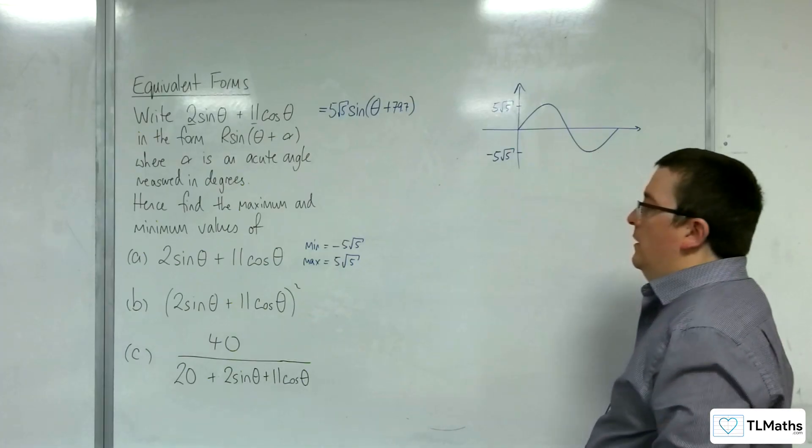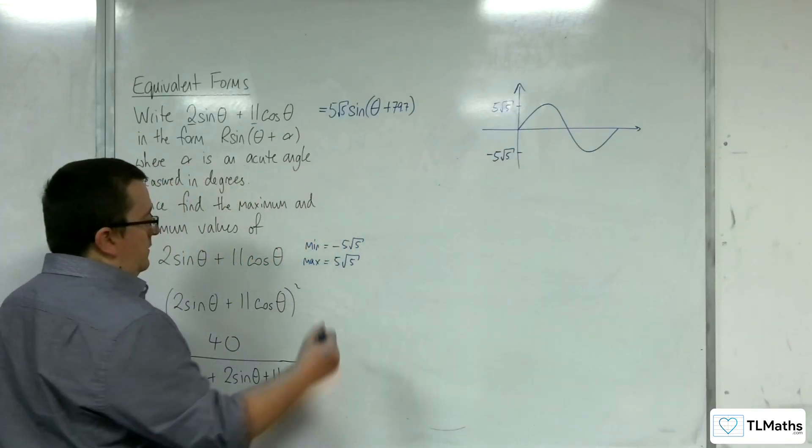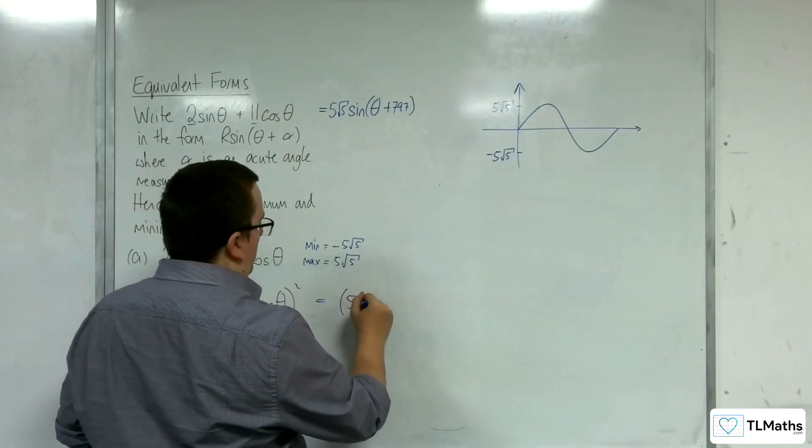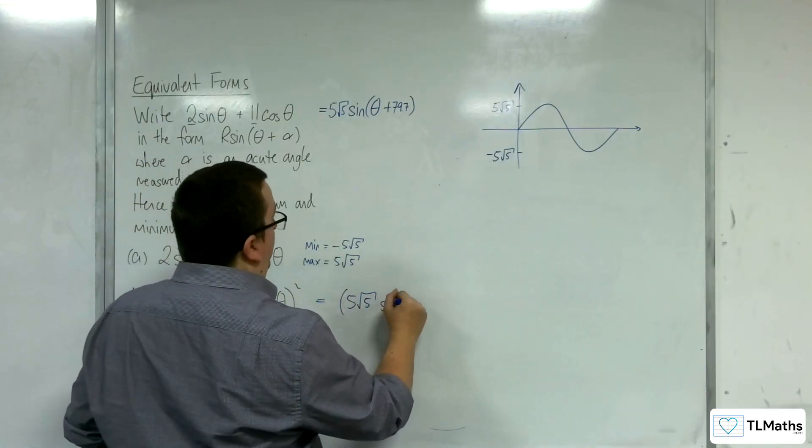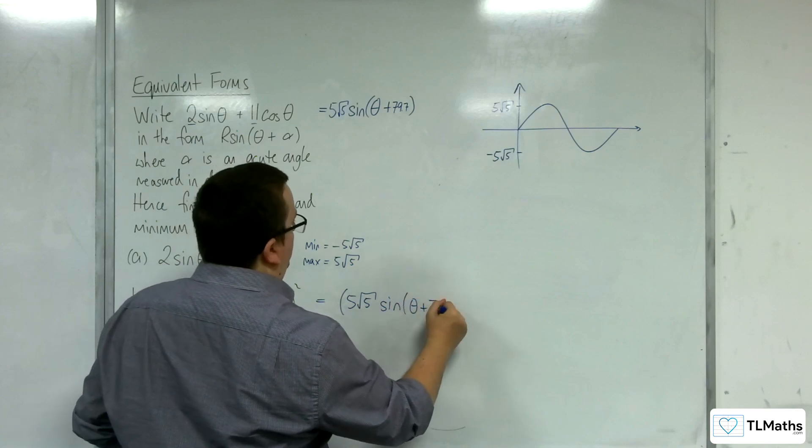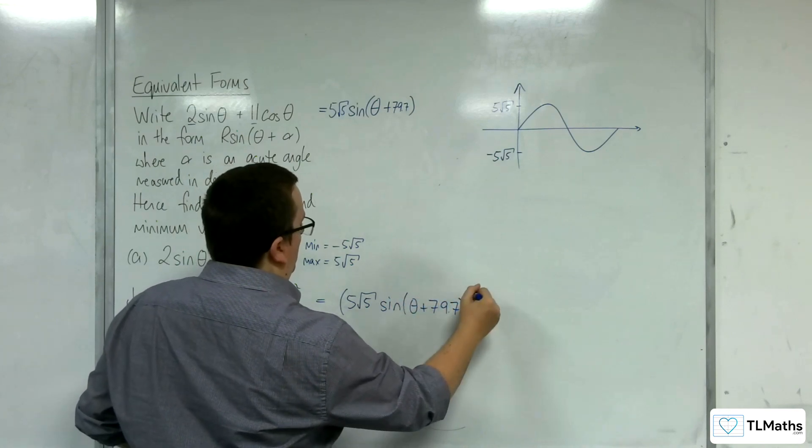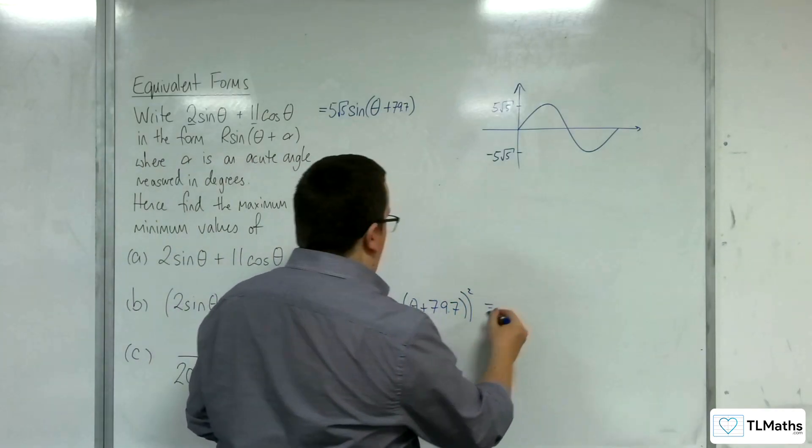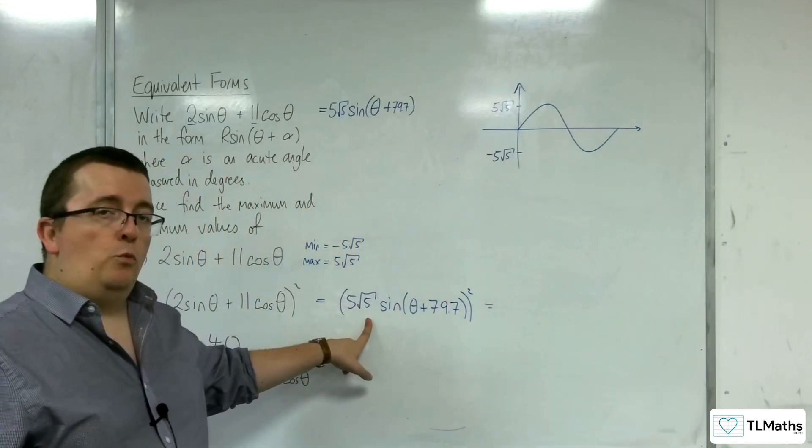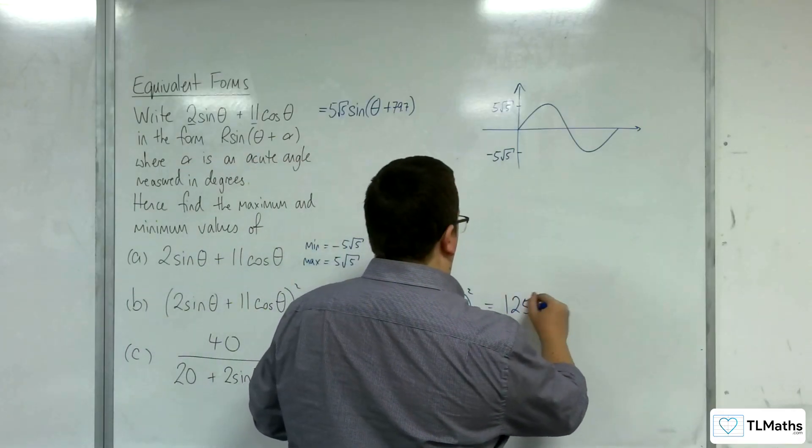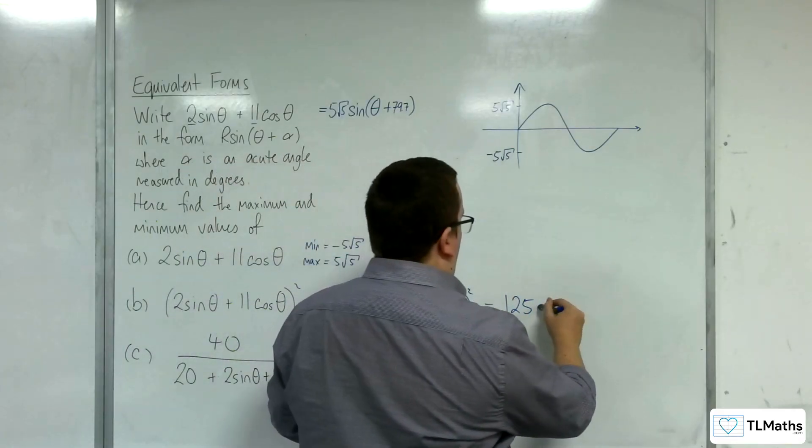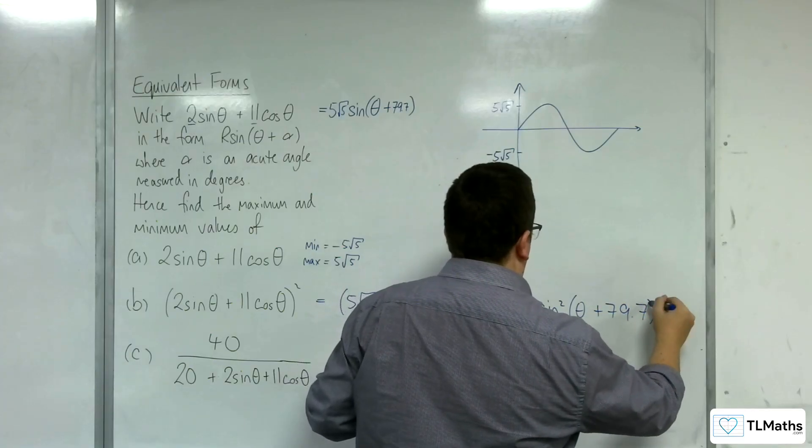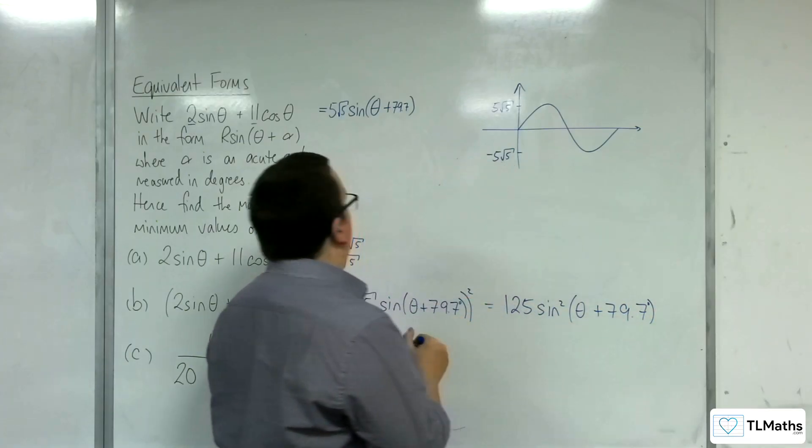Okay, now, what we have here then, is 5 root 5 times sine of theta plus 79.7 degrees all squared. So this would be equal to, well, the 5 root 5 was root 125, so squaring that is 125. And this sine squared, theta plus 79.7 degrees. Pop in the degree symbol.